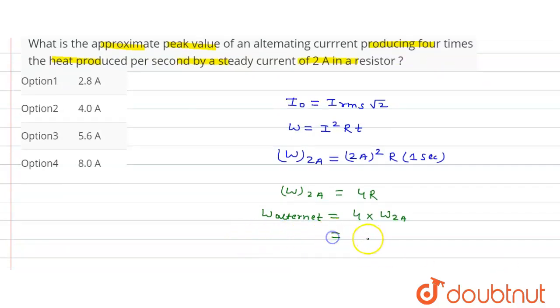So this will be 16R, since W_2A equals 4R. We can write this as 4² times R.